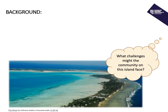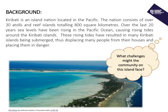Before we look at an example essay task, a bit of background. Looking at a photo of an island community — it's Kiribati, an island nation located in the Pacific. The nation consists of over 30 atolls and reef islands totalling 800 square kilometres. Over the last 20 years, sea levels have been rising in the Pacific Ocean, causing rising tides around the Kiribati islands, resulting in many islands being submerged and displacing many people from their homes. Climate change is a big threat to this community.